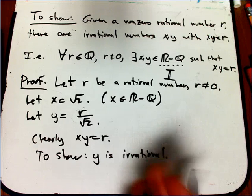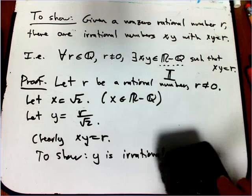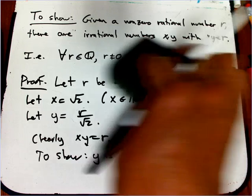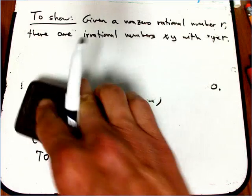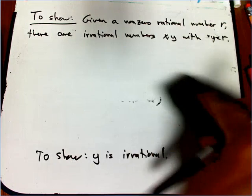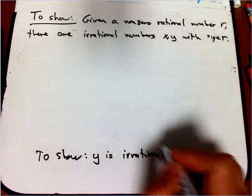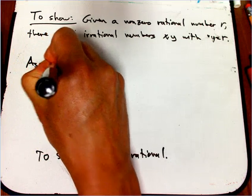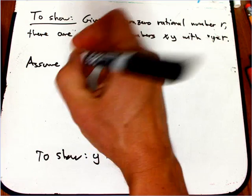Now that's a negative statement in a certain sense, and so it's a thing we'd be very natural to prove by contradiction. I'll leave the statement up there. So we just need to show that Y is irrational. So assume that Y is rational.